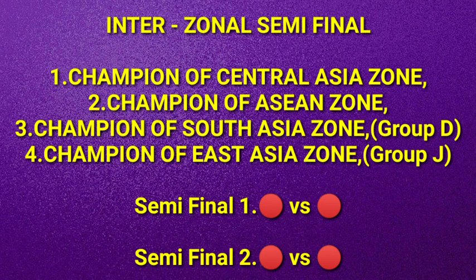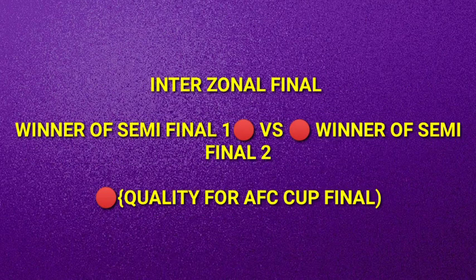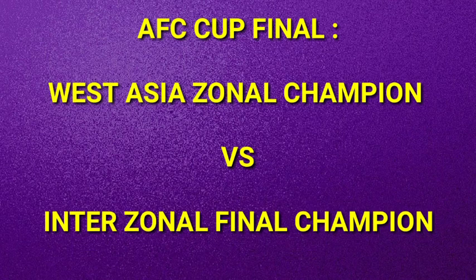In the Inter-Zonal Semi-Final, the champions of Central Asia zone, Asian zone, South Asia zone (Group D winners), and East Asia zone (Group J winners) will play two semi-final games on a home-and-away basis. There will be a draw before these games, and the two winners will face each other in the Inter-Zonal Final, also on a home-and-away basis. The winner of the Inter-Zonal Final will qualify for the AFC Cup Final, where they will face the West Asia Zonal champion.